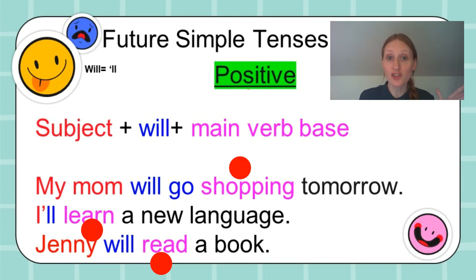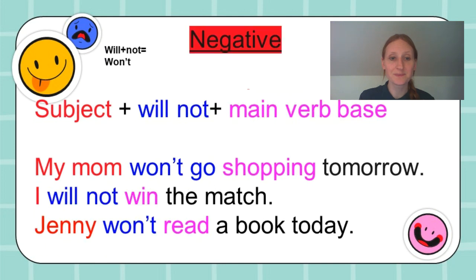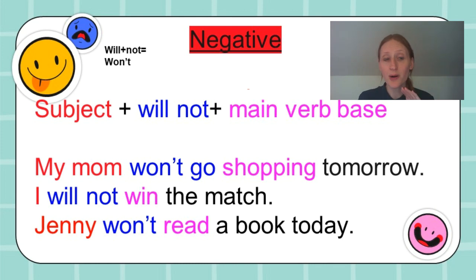You can also use verbs with -ing. Both are correct because we are talking about things that we will be doing in the future — both are fine to use. Now, don't forget will plus not is won't. So, we have the subject, will not, and the main verb base. My mom won't go shopping tomorrow. I will not win the match. Jenny won't read a book today.